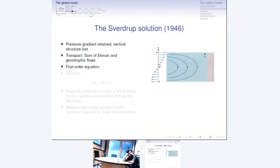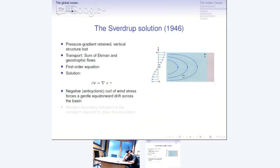Sverdrup got a first-order equation in X, that is the east-west coordinate, and solved it. The first-order equation can be in V or pressure. His solution was very simple. Beta is the rate of change of Coriolis acceleration with latitude and V is the north-south transport. So beta times V equals the curl of wind stress. The way this set of equations are solved is you do not look at the earth as a sphere. You account for its rotation by using this term beta, which allows the Coriolis acceleration to change with latitude, but you linearize this change — which is basically going as sin theta — about some central latitude. In this case it would be 30 degrees north. You have the westerly winds to the north of 30 degrees, and you have easterlies to the south of 30 degrees.